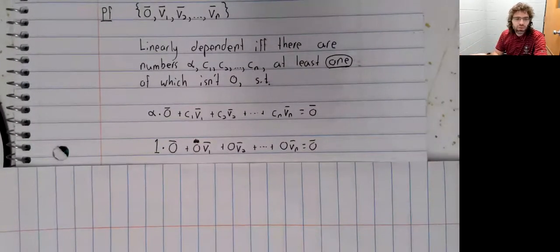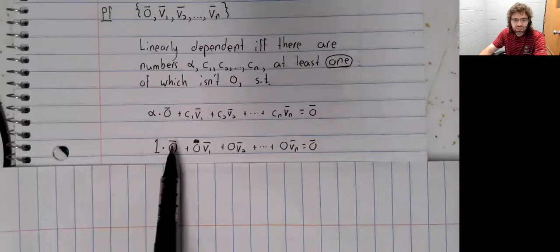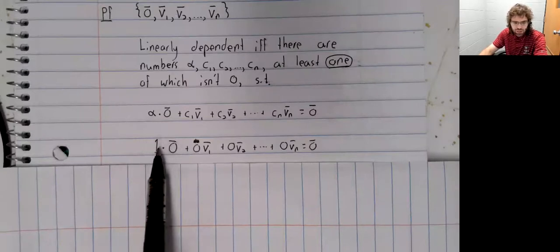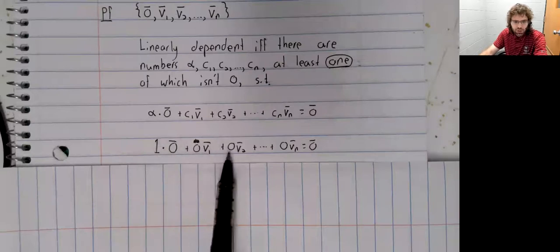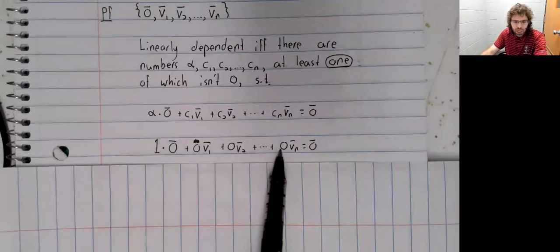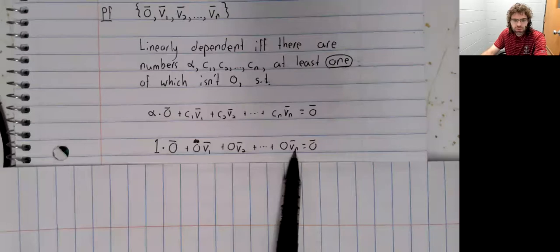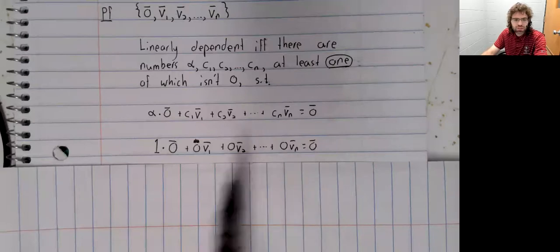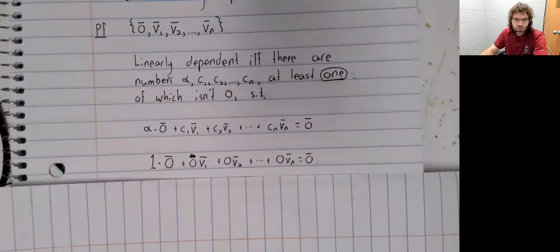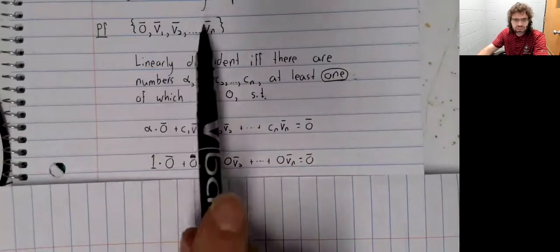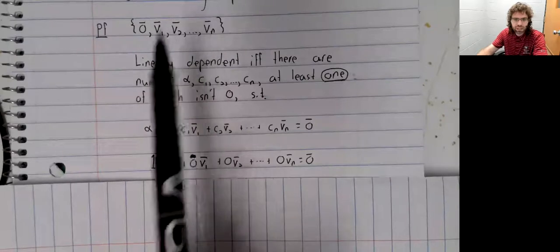Make the coefficient in front of the zero vector not be zero, while all of the other coefficients are zero. This linear combination equals zero. It's non-trivial. So this set is linearly dependent.